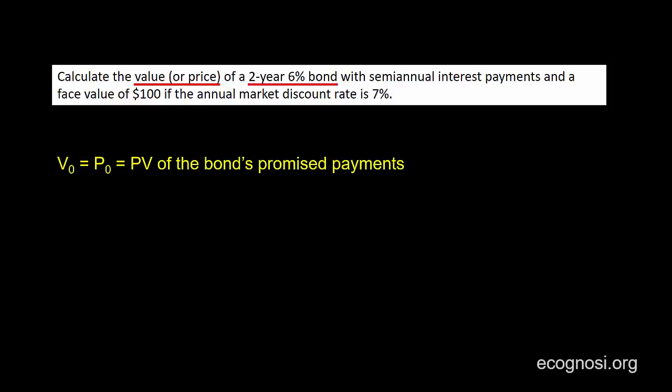We have a 2-year 6% bond, so it matures in 2 years. The 6% is the coupon rate, and I wrote it this way — without specifying that it is the coupon rate — on purpose. The reason is to familiarize you with the fact that sometimes it is given in this manner, without being explicitly specified. So whenever you see it expressed this way, you will now be able to realize that the percentage refers to the coupon rate.